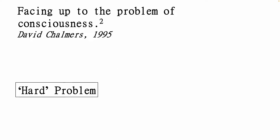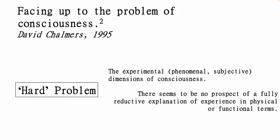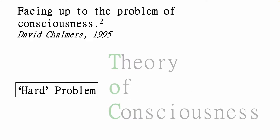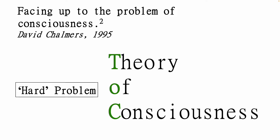Seth and Bain describe how we can understand the hard problem as the experiential dimensions of consciousness. At the moment, there seems to be no prospect of a fully reductive explanation of experience in physical or functional terms, which Seth and Bain describe as the explanatory gap. To close this gap, we would need to have a theory of consciousness in hand that either aims to address the hard problem directly, or justifiably sidesteps it entirely. Having an empirically validated theory of consciousness, as Seth and Bain say, should be the goal of all consciousness science.